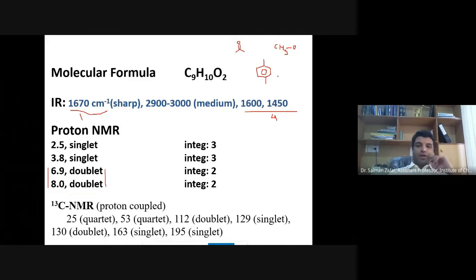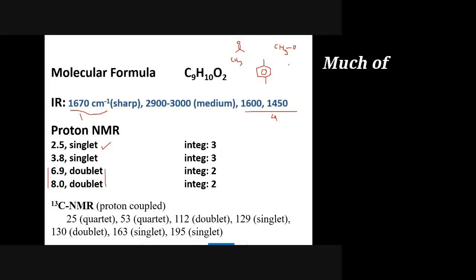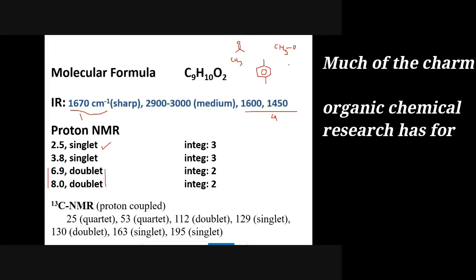So from these fragments we have six, seven, eight carbons till now. We have another CH3 also at 2.5, and you proposed that it may be attached to this carbonyl there. So then we have nine carbons, of course, and hydrogens: 4 plus 3, 7 plus 3 of the CH3, we have another CH3, so 10 hydrogens are also here, and we have two oxygens.